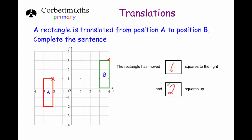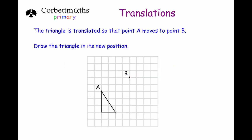So the rectangle has been moved six squares to the right and two squares up. I always like to check with another point, so I'll use the bottom left corner: one two three four five six across and two up. That's correct.